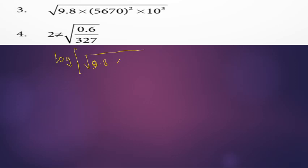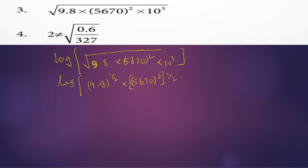Let's take a look at the square root of 9.8 into 5670, whole square, into 10 to the power of 3. Then: 1.2 into 5670 squared, all over 2 into 10 to the power 3, whole to the power 1 over 2.